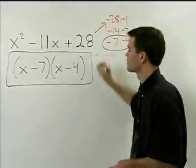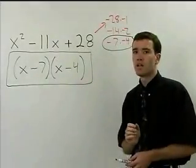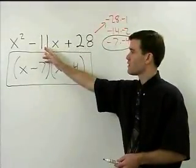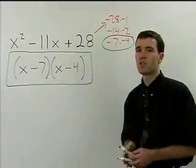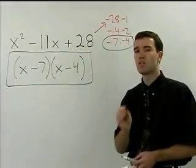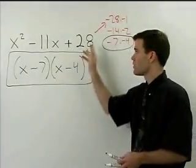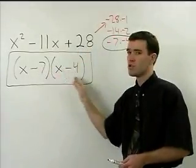And that's our answer. Remember that if your middle term is negative and your constant term is positive, you're going to use the negative factors of your constant term for your two binomials.